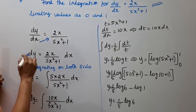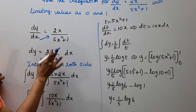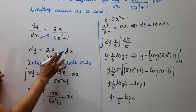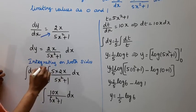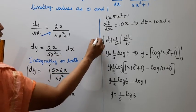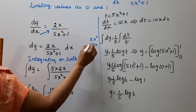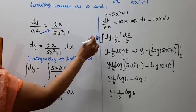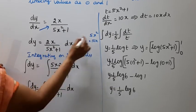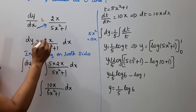Integrating both sides. Let's integrate the right side. We look at 5x squared — differentiating 5x squared gives 10x. So the derivative is 10x.